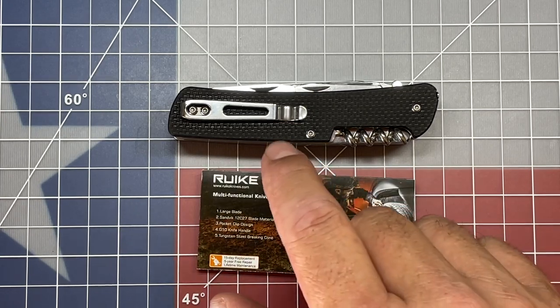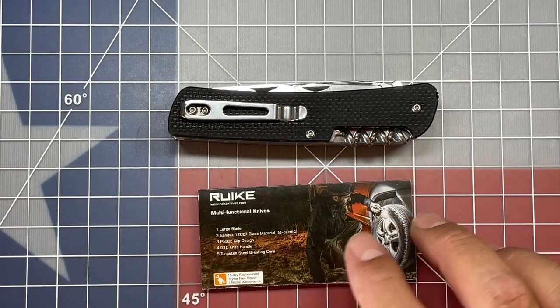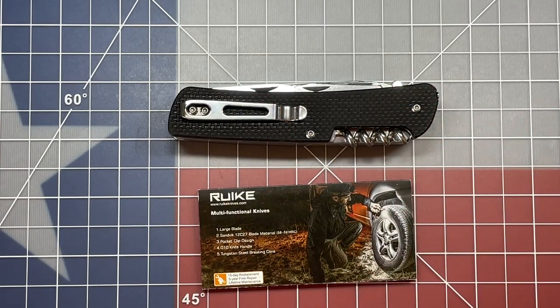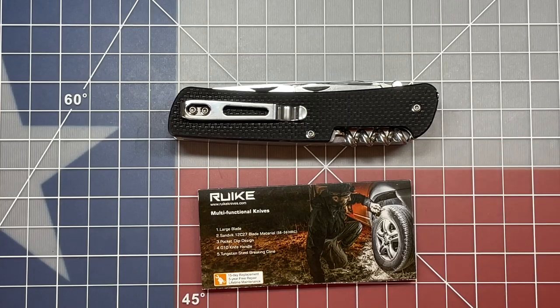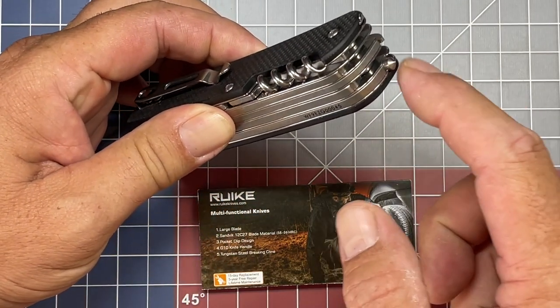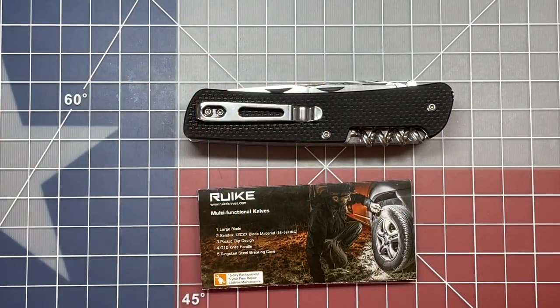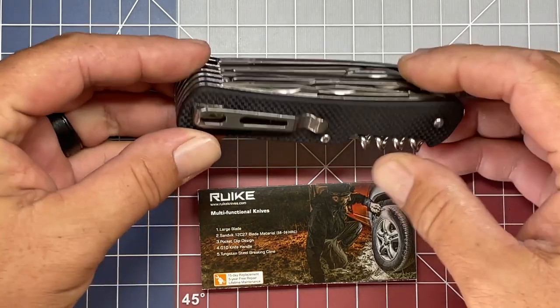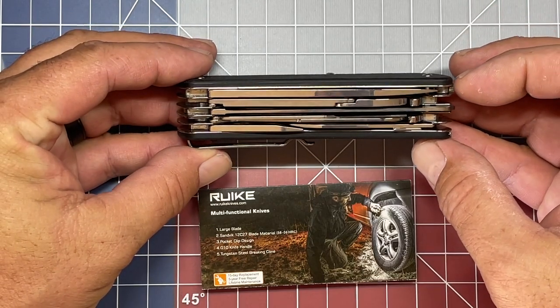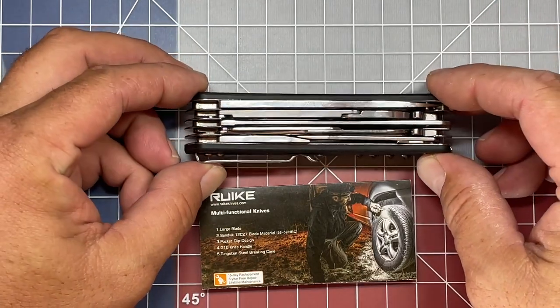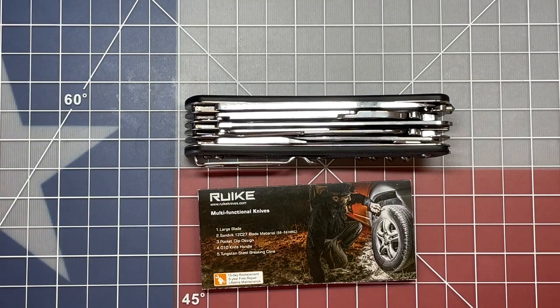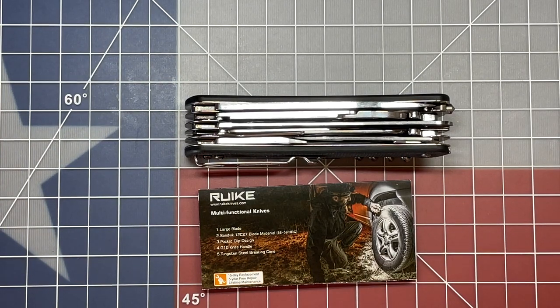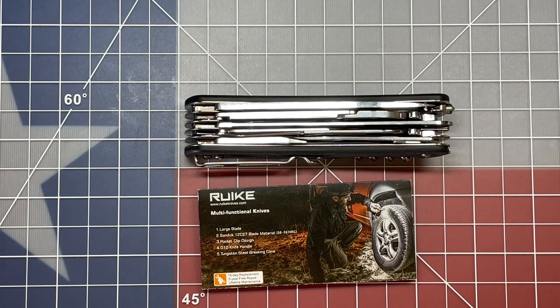One thing I do like is that they integrate pocket clips and GTN handle scales. All of them that I'm aware of also include a tungsten glass break on them as well. This is a five-layer knife, so the heft on this is up there pretty good.